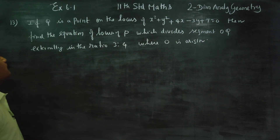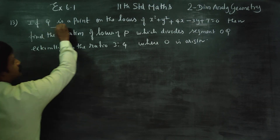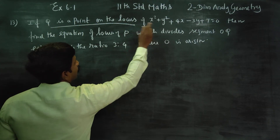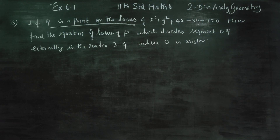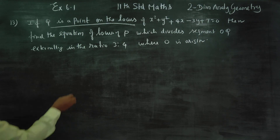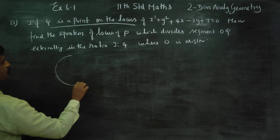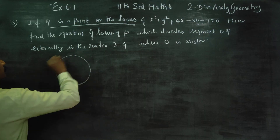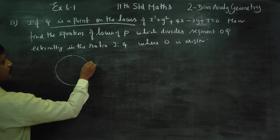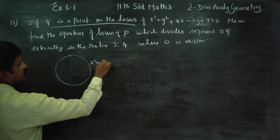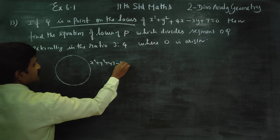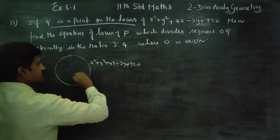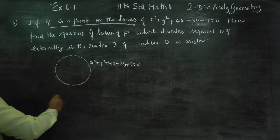If Q is a point on the curve x squared plus y squared plus 4x minus 3y plus 7, we have the equation x squared plus y squared plus 4x minus 3y plus 7 is equal to 0. It is a curve.